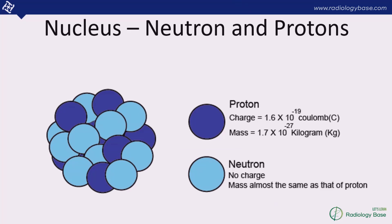This is an image of nucleus where you can see the protons and neutrons arranged with each other. Just a simple revision: the mass of the proton is 1 AMU and 1 electronic positive charge, whereas neutron mass is 1 AMU with no charge on the neutrons.